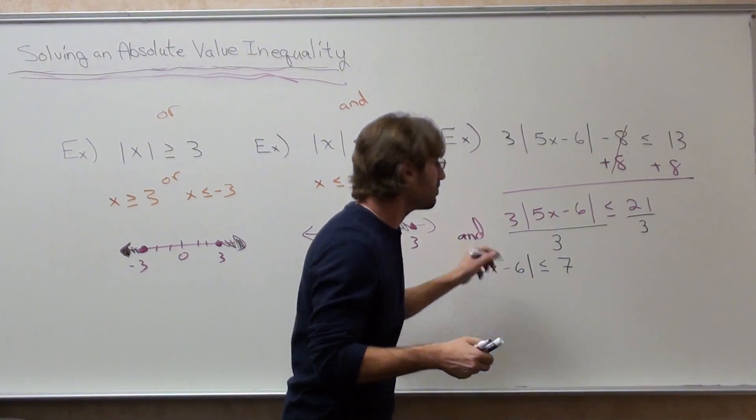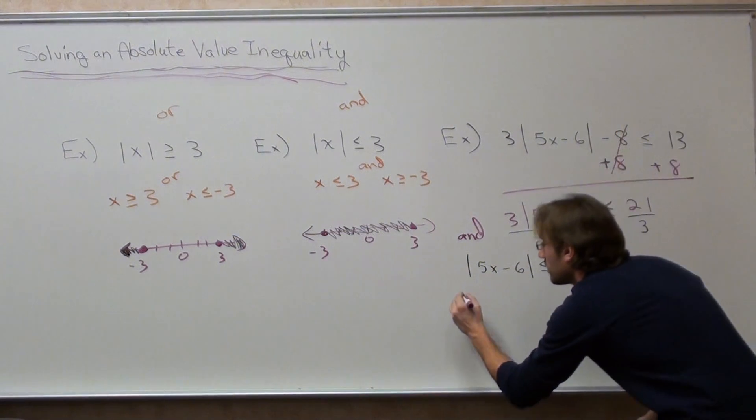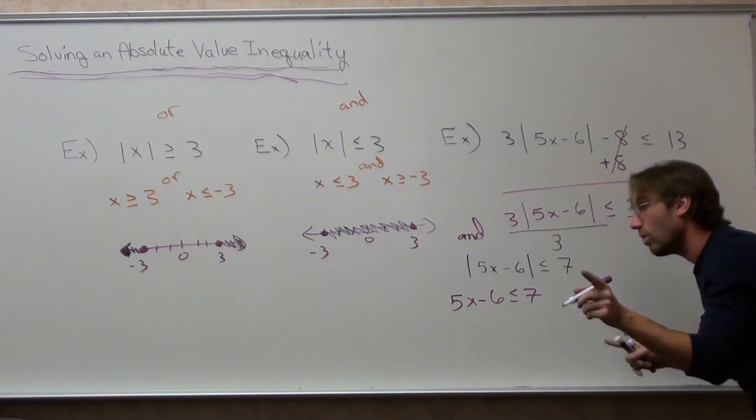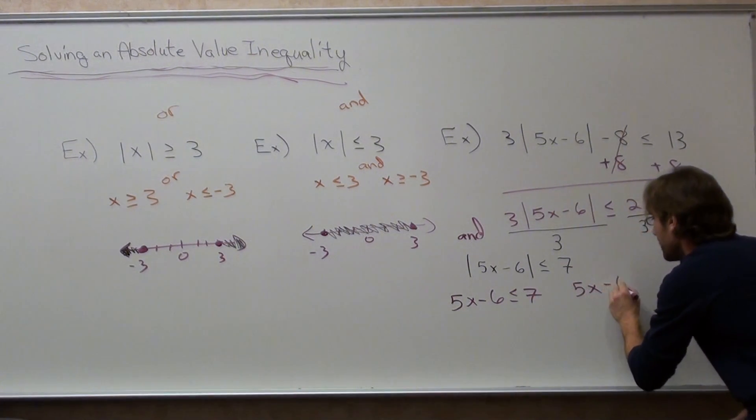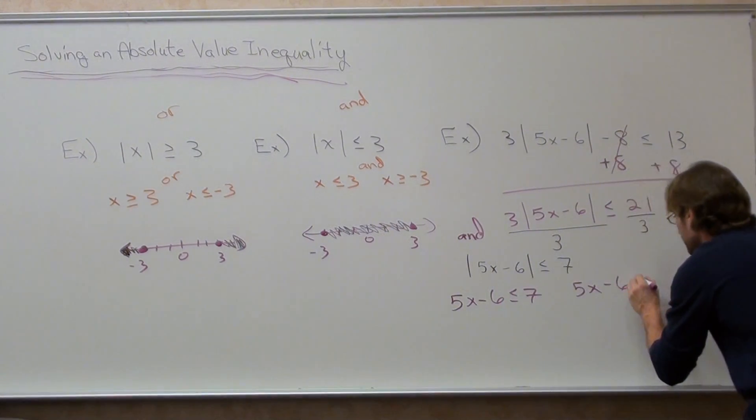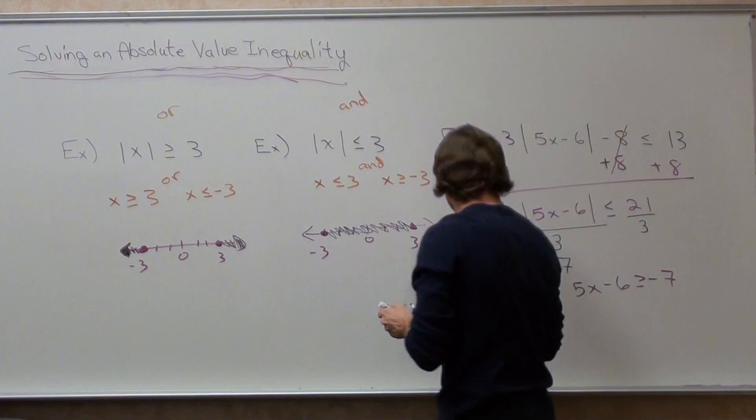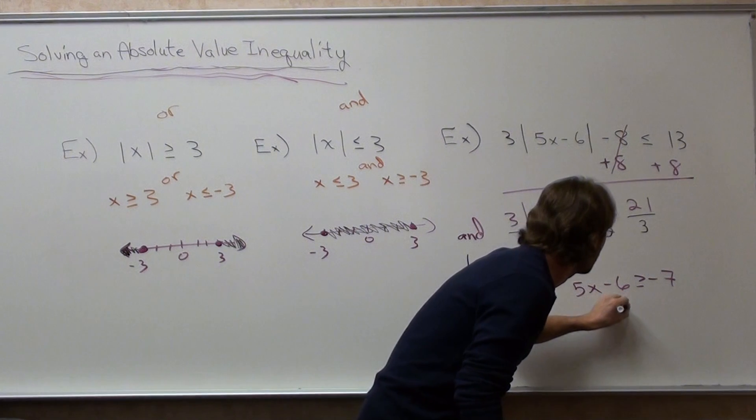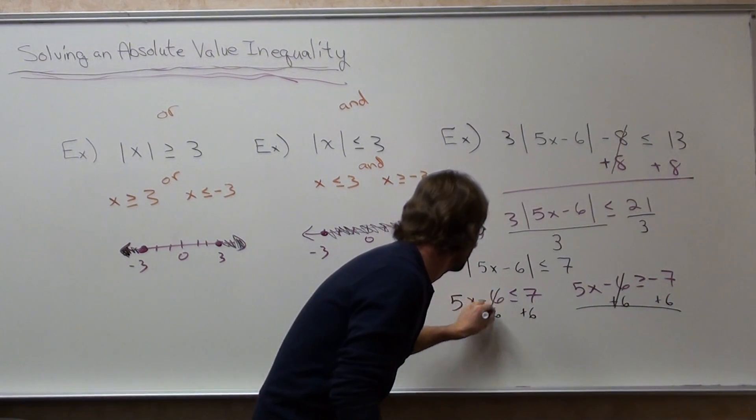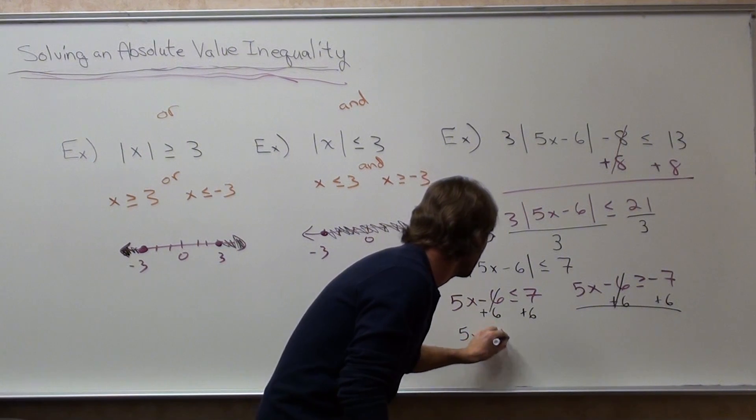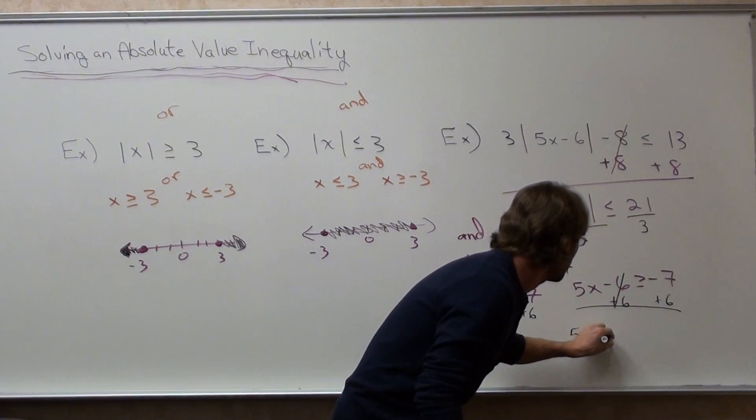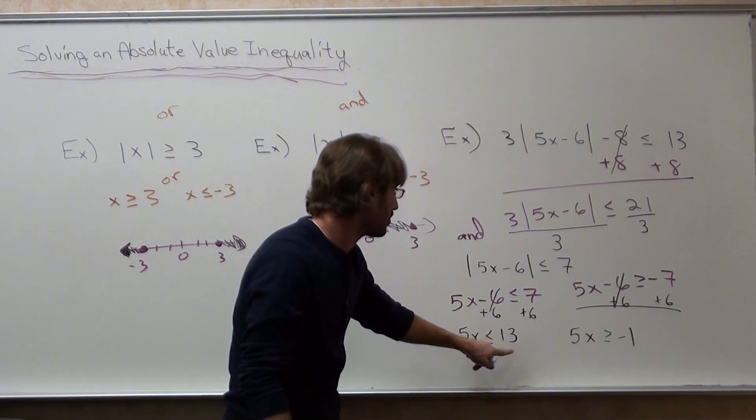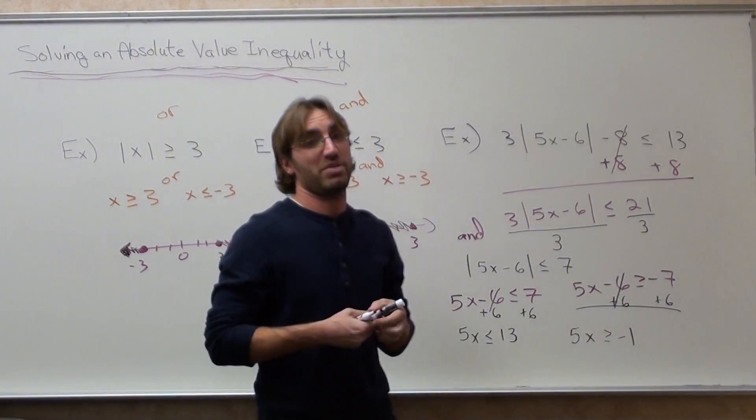So my shading should be cluttered in. So 5x minus 6 is less than or equal to 7 and 5x minus 6 is greater than or equal to negative 7. So we're going to go ahead and solve for both. 5x is less than or equal to 13. 5x is greater than or equal to 1. Divide by 5 on both sides.